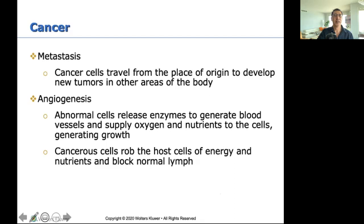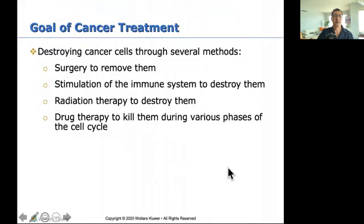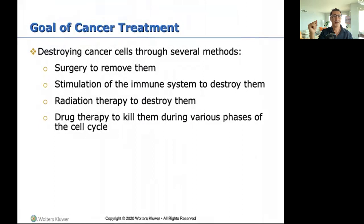Angiogenesis: abnormal cells release enzymes to generate blood vessels and supply oxygen and nutrients, generating their own growth — essentially taking over the good cells. Goals of cancer treatment: surgery to remove the cancer (e.g., mastectomy), stimulation of the immune system, radiation therapy, and drug therapy to kill cancer cells during various phases of the cell cycle — which is what we're focusing on.